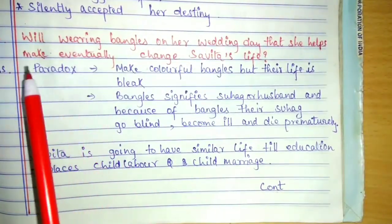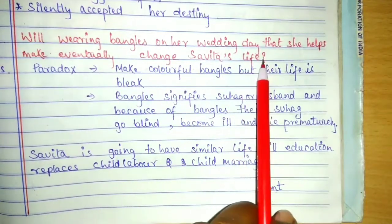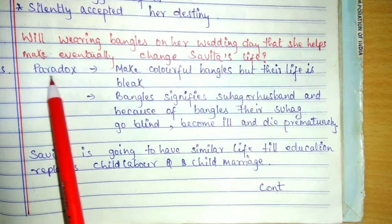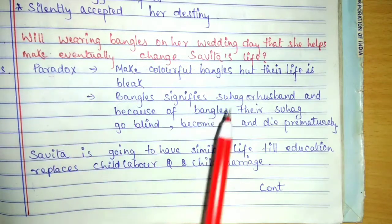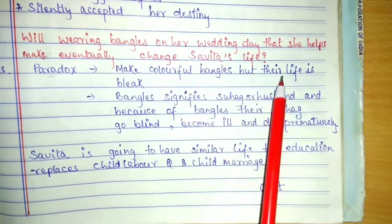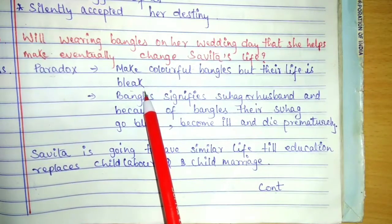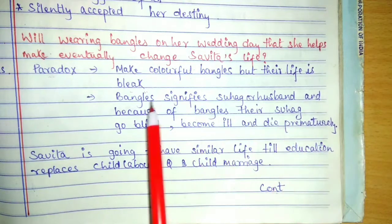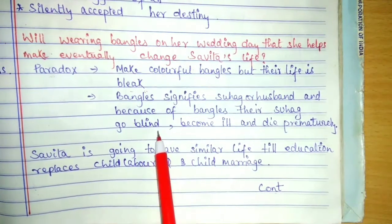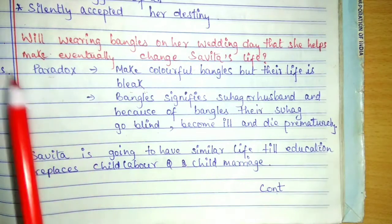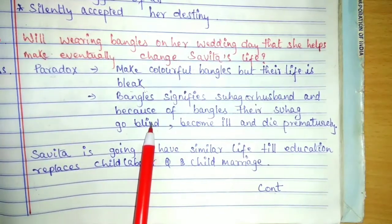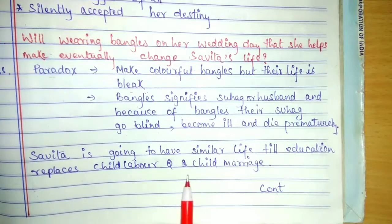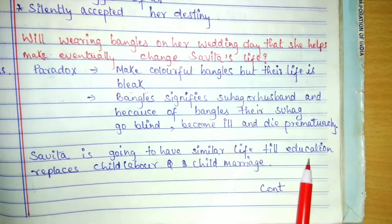Will wearing bangles on her wedding day change Savita's life? Here we find paradox — two contrasting situations acceptable at the same time. They make beautiful, colorful bangles, but their own life is bleak and full of darkness — no proper food, shelter, or happiness. Bangles signify Suhaag, yet because of bangle making they are going blind, becoming ill, and dying before time. They bring happiness to others' lives but their own life is full of darkness. Savita will have a similar life until education replaces child labor and child marriage.